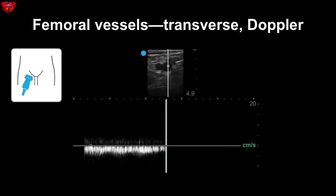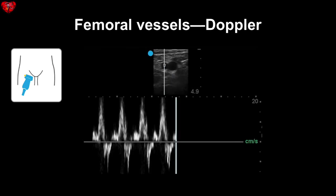You can also use Doppler to tell the difference. Here is the Doppler signature of the femoral vein: low velocity with a smoldering waveform. Compared to here — this is the Doppler signature of the femoral artery: high velocity, pulsatile spikes.